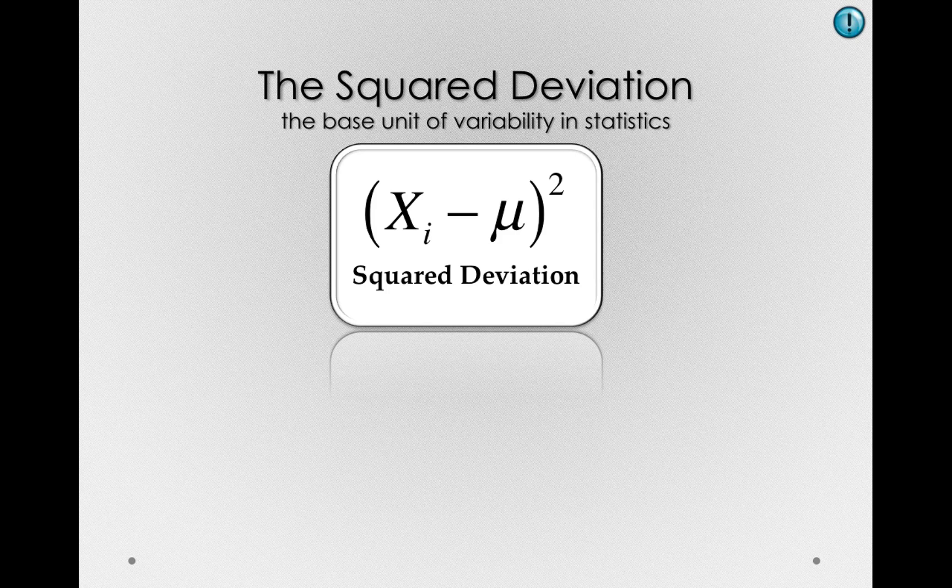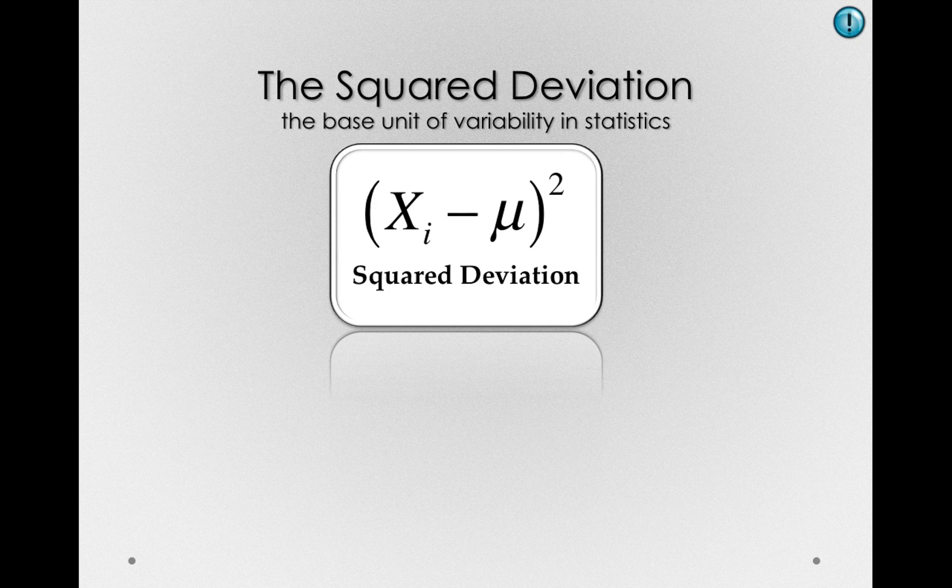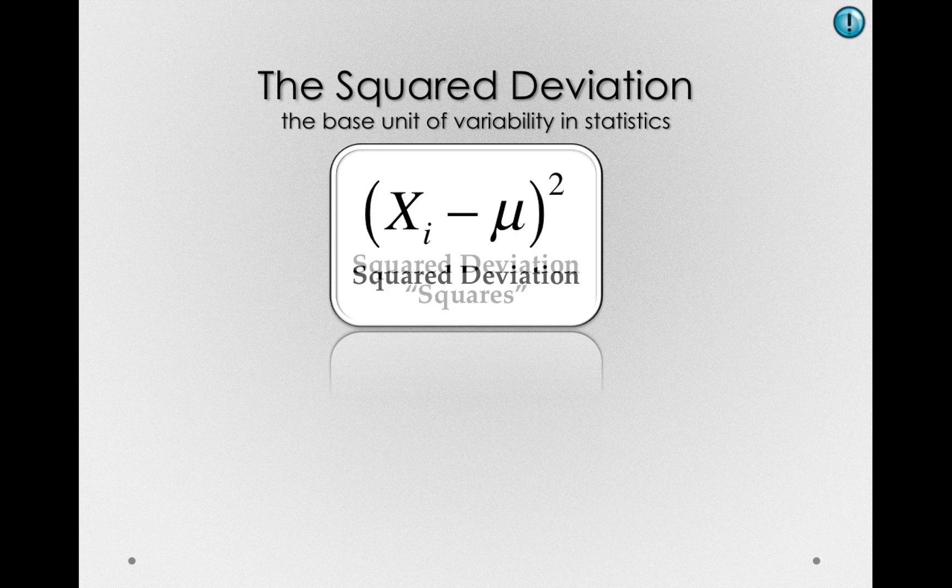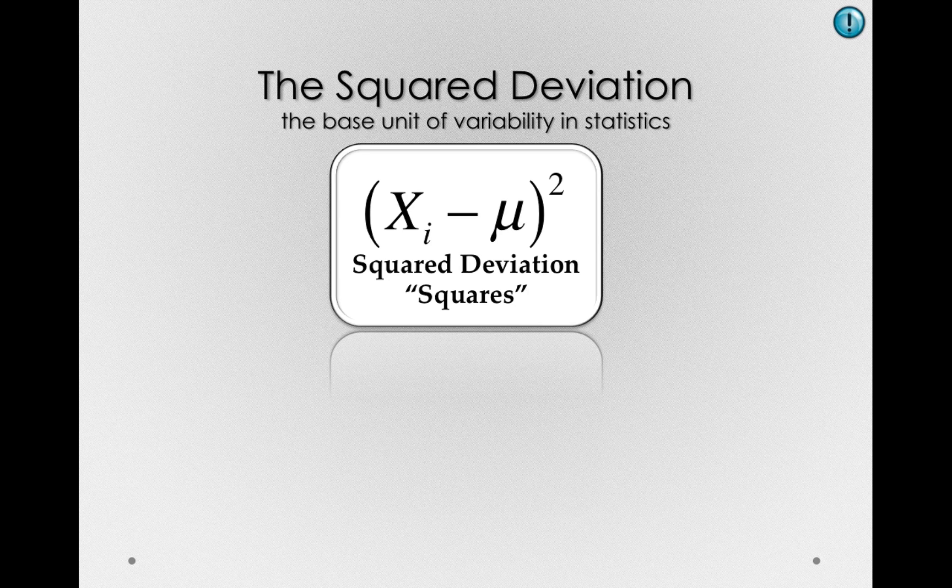Now the squared deviation is something we'll see a lot and something that is used over and over in statistics. And for things that we use often, we like to have shorter terms. So the squared deviation we'll often refer to as simply squares. So a square, in this case, is an individual's deviation—the distance from their point to the mean—squared.